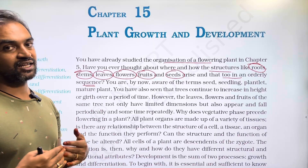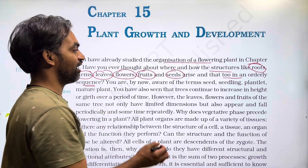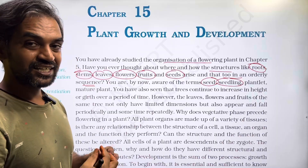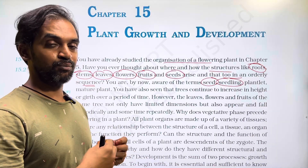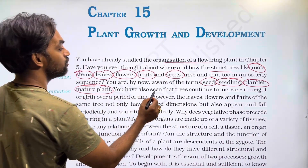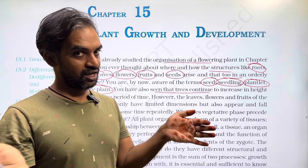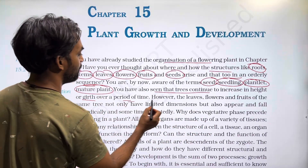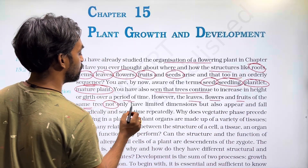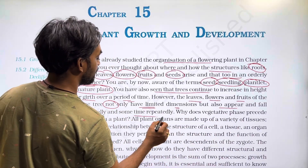So in an orderly manner — root, stem, leaves, flower, fruit, seeds. You are by now aware of the terms seed and seedling. A seedling has a radicle and plumule, and then the plant grows to become a mature plant. You have also seen that trees continue to increase in height over a period of time. However, the leaves, flowers, and fruits of the same tree have limited dimensions and appear and fall periodically.